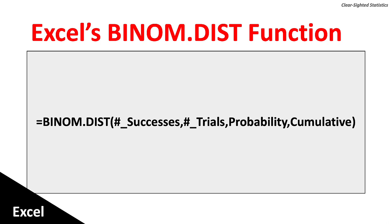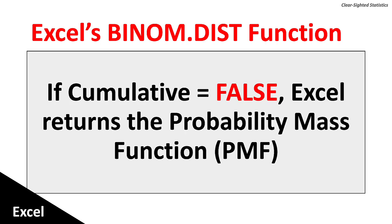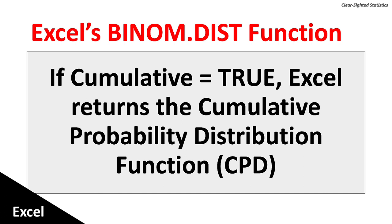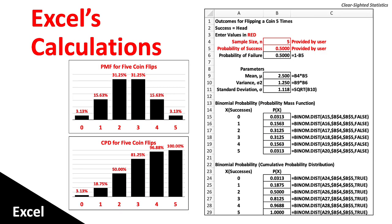Excel's BINOM.DIST function has four arguments: one, the number of successes; two, the number of trials; three, the probability of success; and four, cumulative. If cumulative equals false, Excel returns the probability mass function (PMF). If cumulative equals true, Excel returns the cumulative probability distribution (CPD). On the right are the PMF and CPD tables for zero to five heads, and on the left are the charts of the probability mass function.